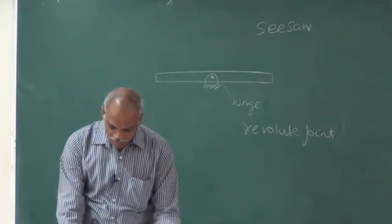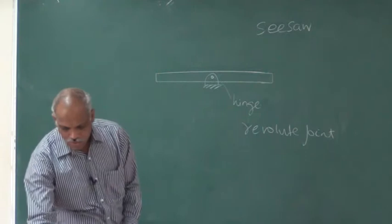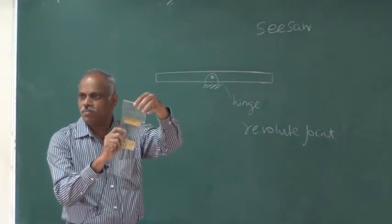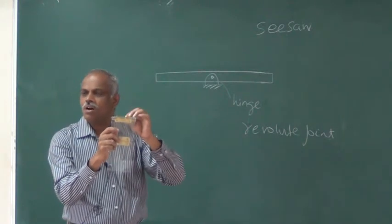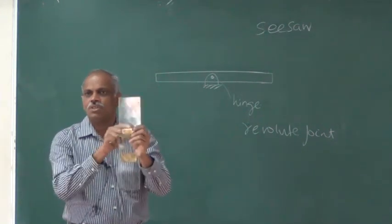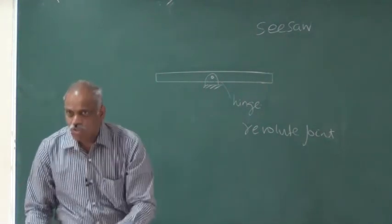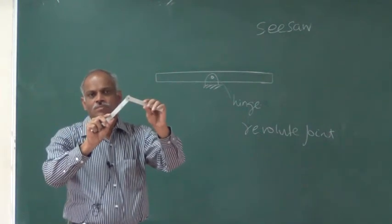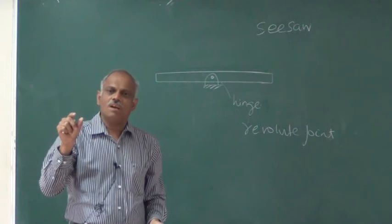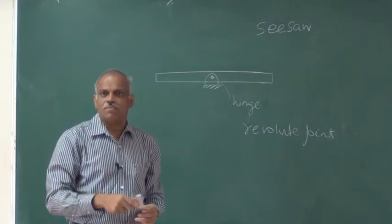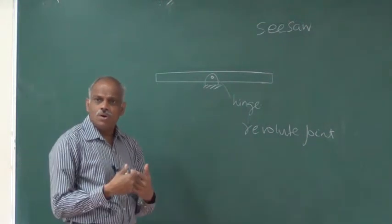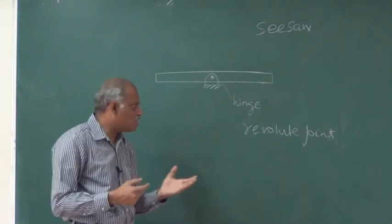Revolute joints are found in doors and windows — these are devices that permit only rotation. No other motion is possible. So it is called a revolute joint or a door hinge. Essentially there is a cylindrical hole and a cylindrical shaft or pin inside it — that arrangement makes a hinge.